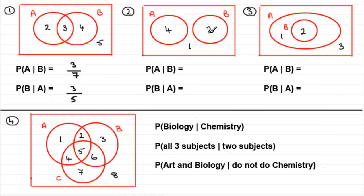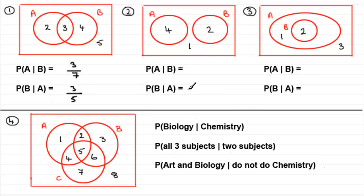Here we've got another Venn diagram. This is a special case when we've got two sets that are apart from one another — often called mutually exclusive events, where two events can't happen at the same time. In this one, we've got four people doing art and two people doing biology, with one person doing neither. There's nobody doing both subjects. You might like to pause the video and have a go, then come back and check your answers.